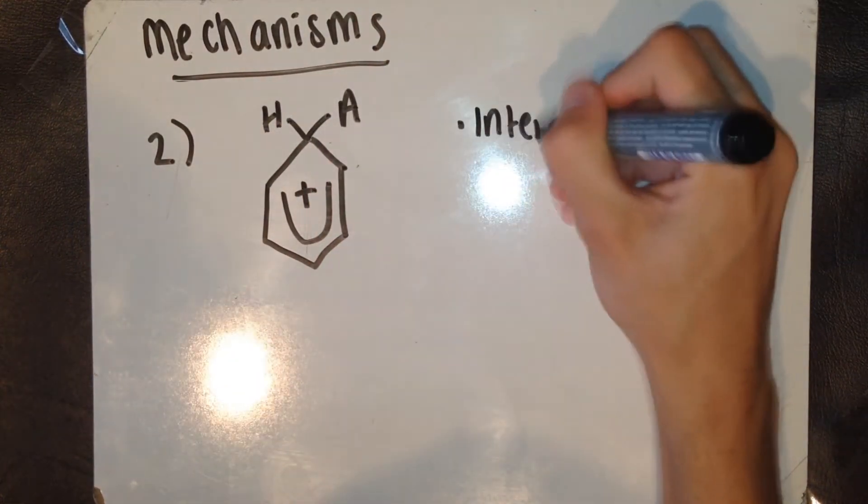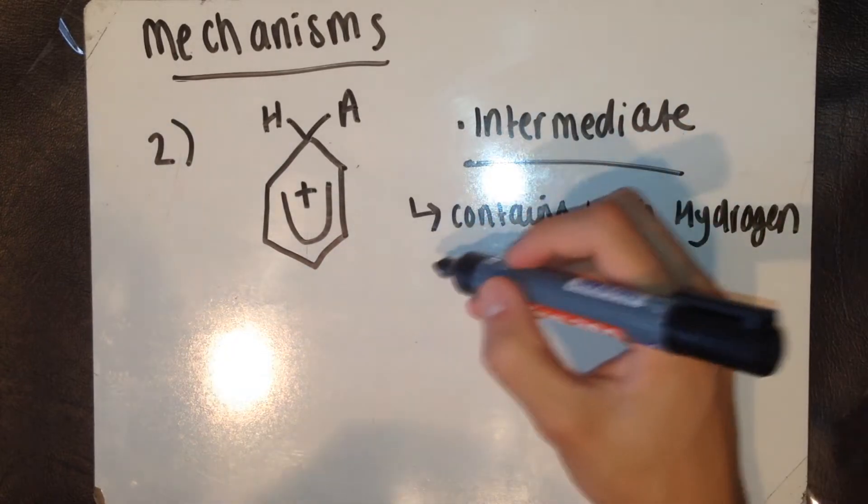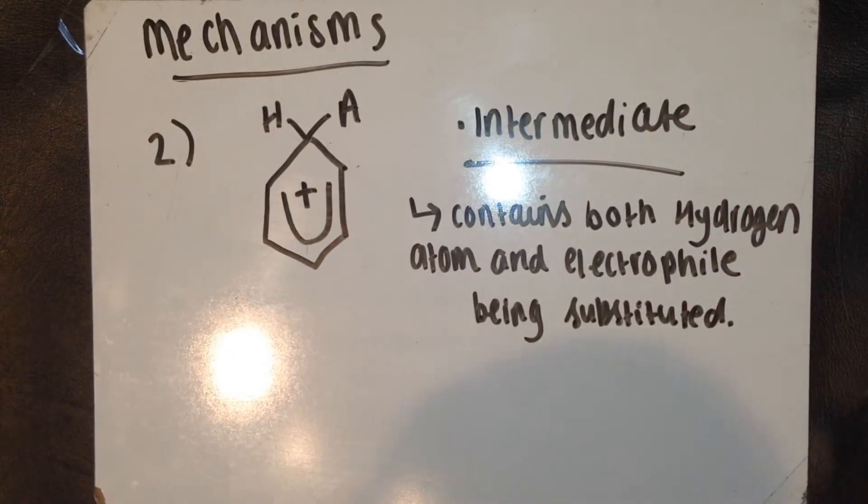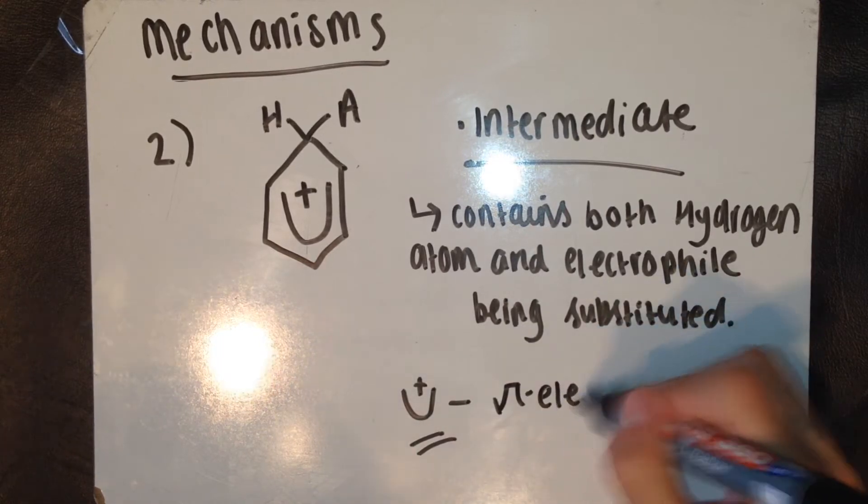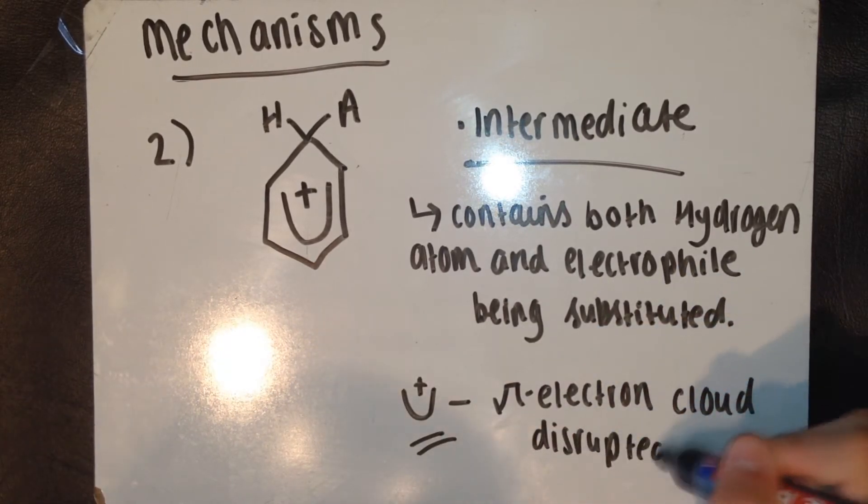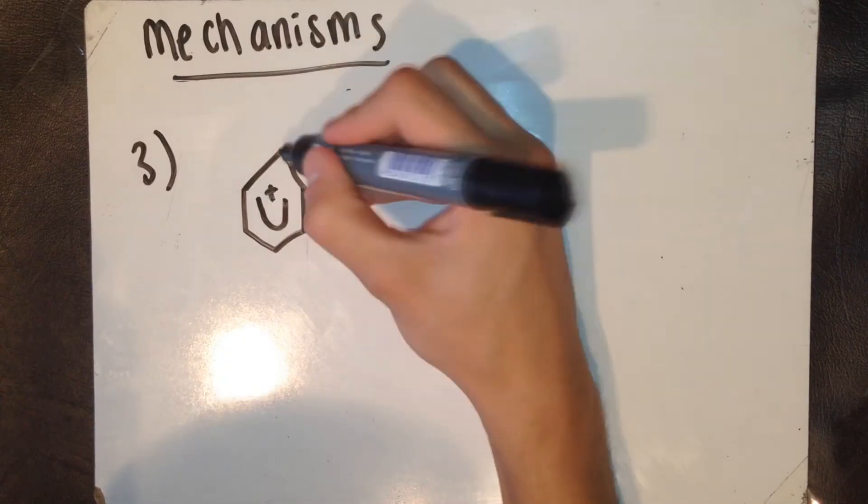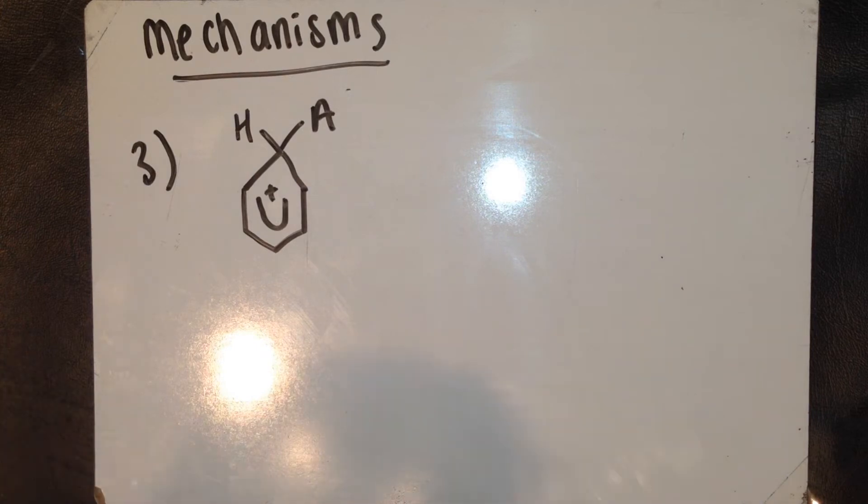So what we've got here is the intermediate. The intermediate contains both the hydrogen atom and the electrophile that are being substituted. Since the electron pair has left the delocalised ring to form a covalent bond, the delocalised pi electron cloud has been disrupted, and the intermediate is now less stable than benzene. The unstable compound immediately reforms a new compound.